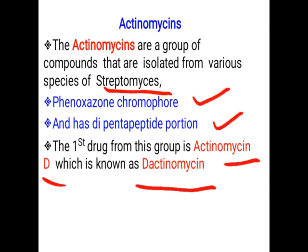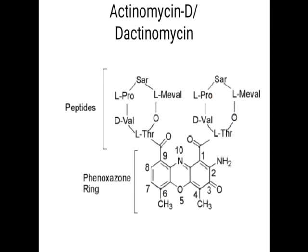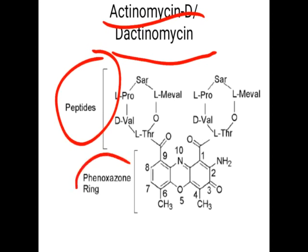These drugs are obtained from various species of Streptomyces having these two features in their structures. The structure of actinomycin D (dactinomycin) shows the peptide part and the phenoxazinone part. These two parts are mainly responsible for the binding to DNA.